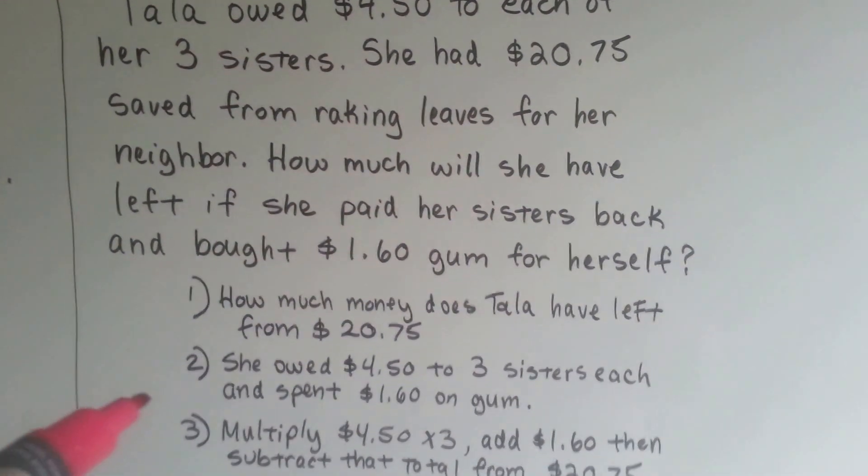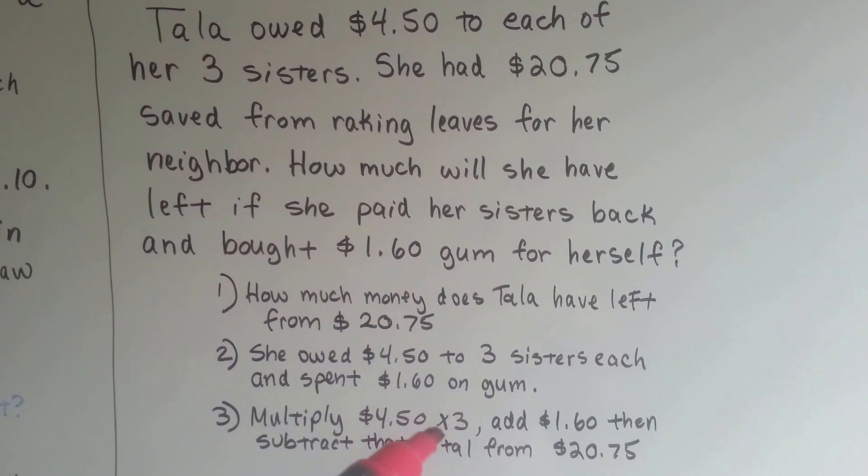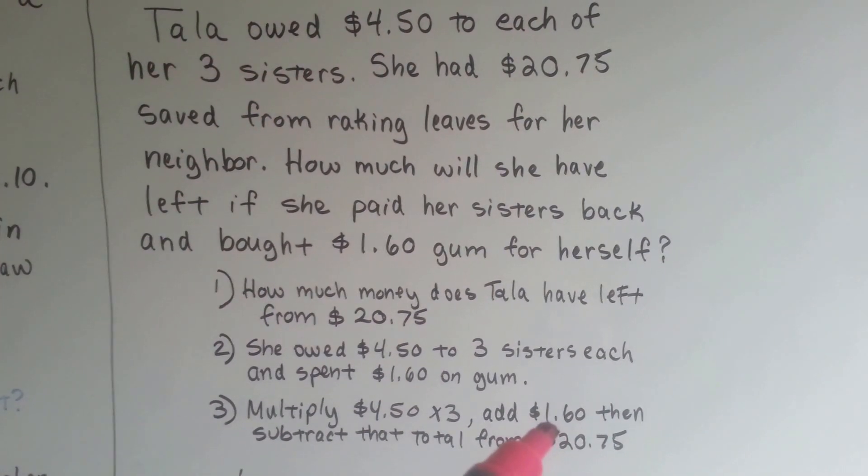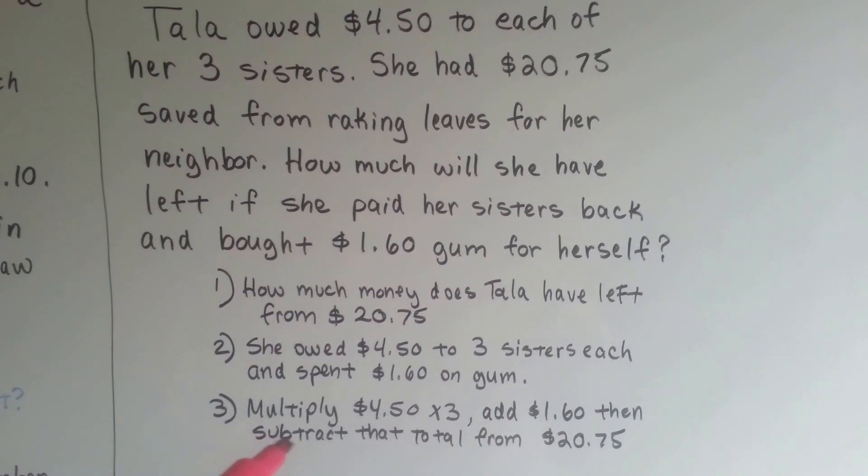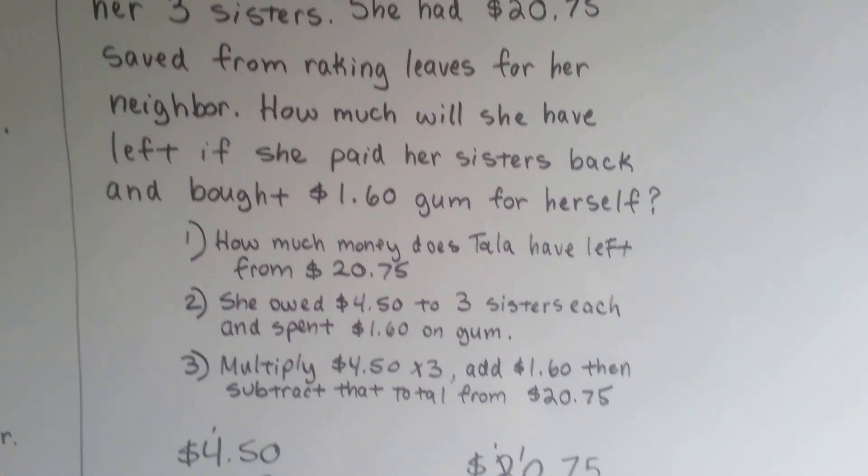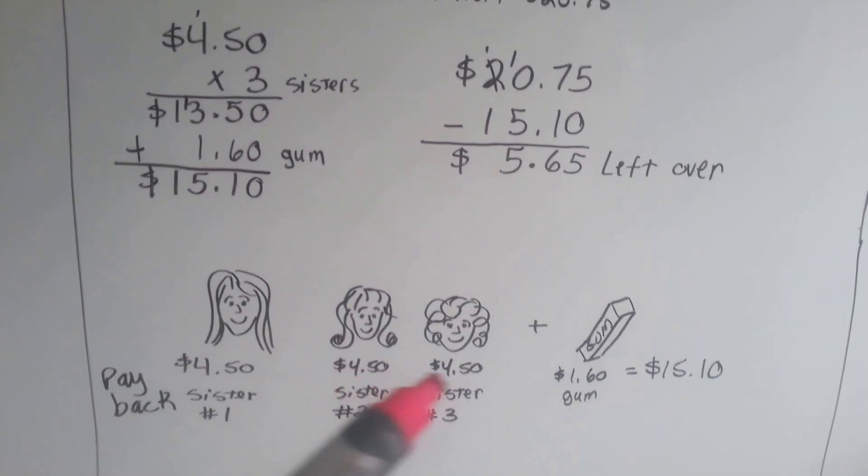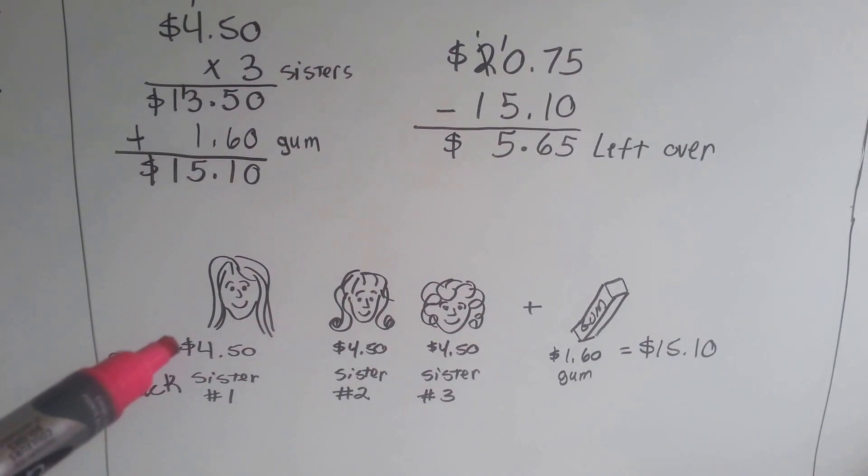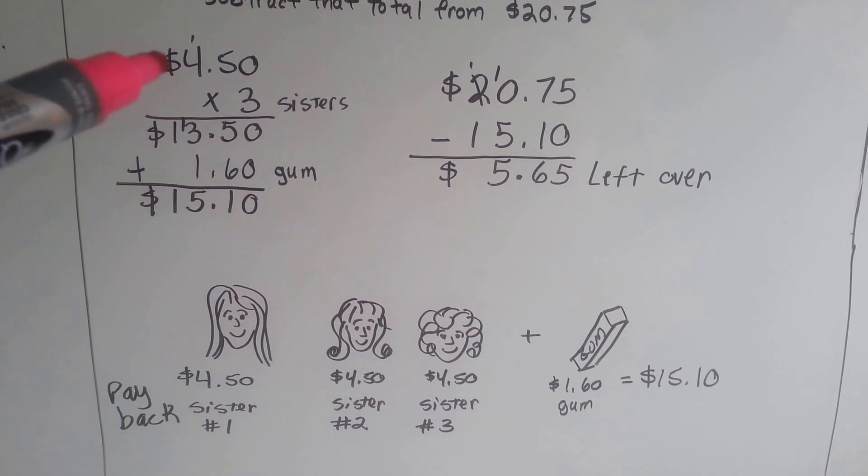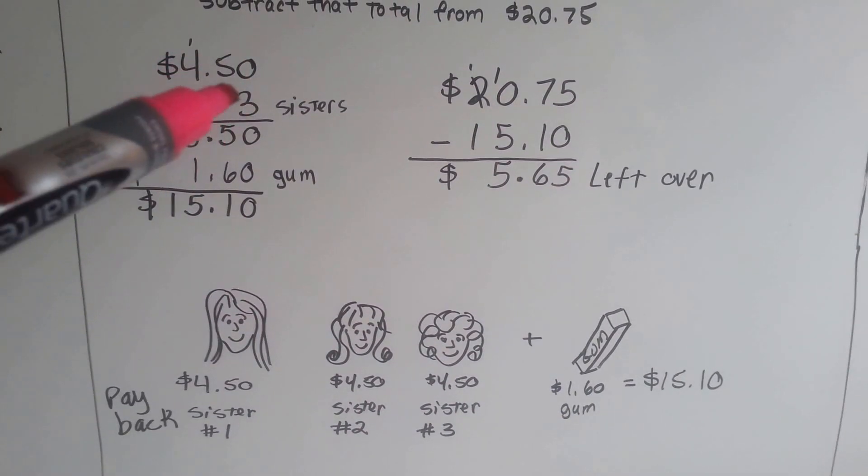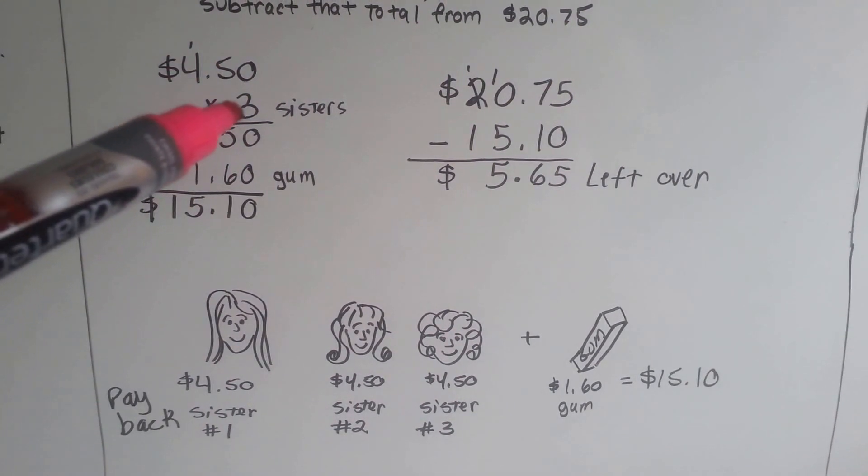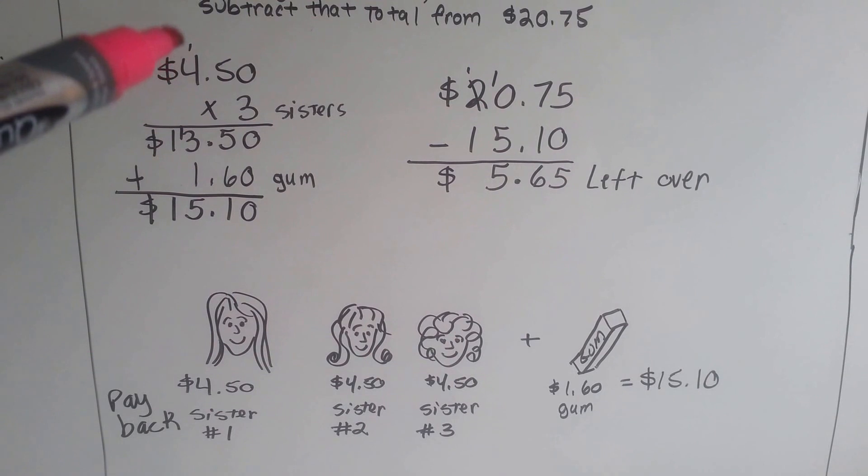This is how she's going to have to do it. She's going to have to multiply the $4.50 by three for each of her sisters. Then she's going to have to add the $1.60 for the gum. And then whatever that total was she needs to subtract that from the $20.75. So here's her three sisters. She paid them back each the $4.50 plus the $1.60 for gum. $4.50 times three sisters. Three times zero is zero. Three times five is fifteen. Carry the one and put the five down. Three times four is twelve. Plus one more is thirteen.